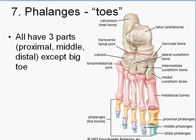And then last, the phalanges are the toes. Similar to the phalanges on your hand, the big toe — like the thumb — is missing the middle bone. The rest of them all have three: proximal, middle, and distal phalanges.